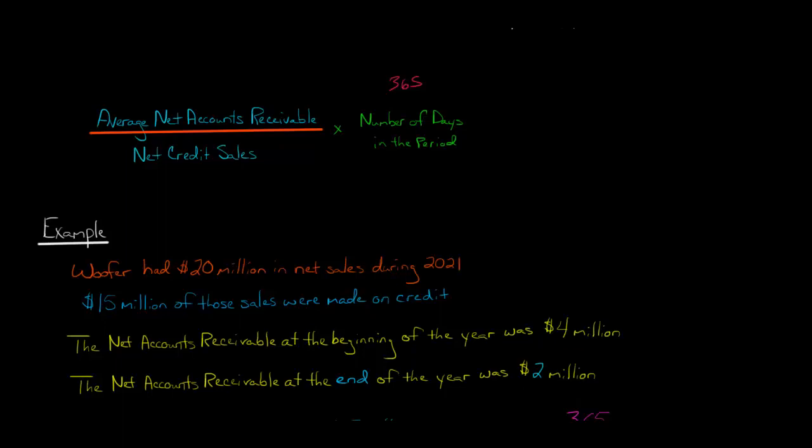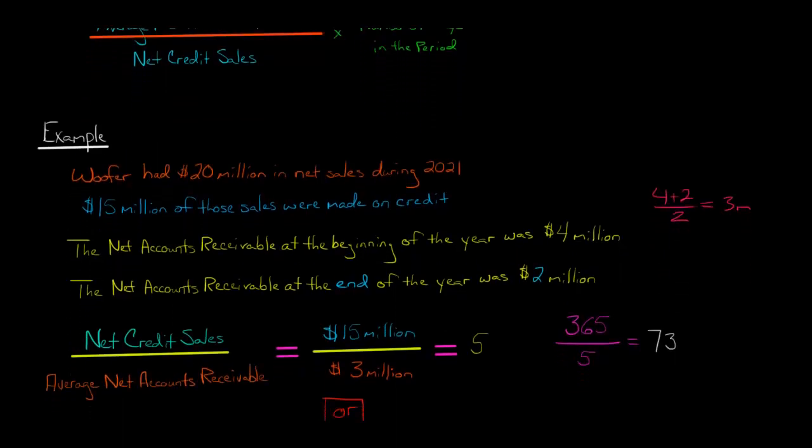So the average net accounts receivable would be $3 million. You see, 4 plus 2 divided by 2, that's the average. So now that's the amount we're going to use when I ask for average net accounts receivable.